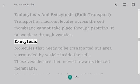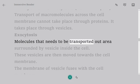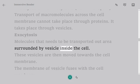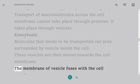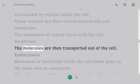Exocytosis: Molecules that need to be transported out are surrounded by vesicle inside the cell. These vesicles are then moved towards the cell membrane. The membrane of vesicle fuses with the cell membrane. The molecules are then transported out of the cell.